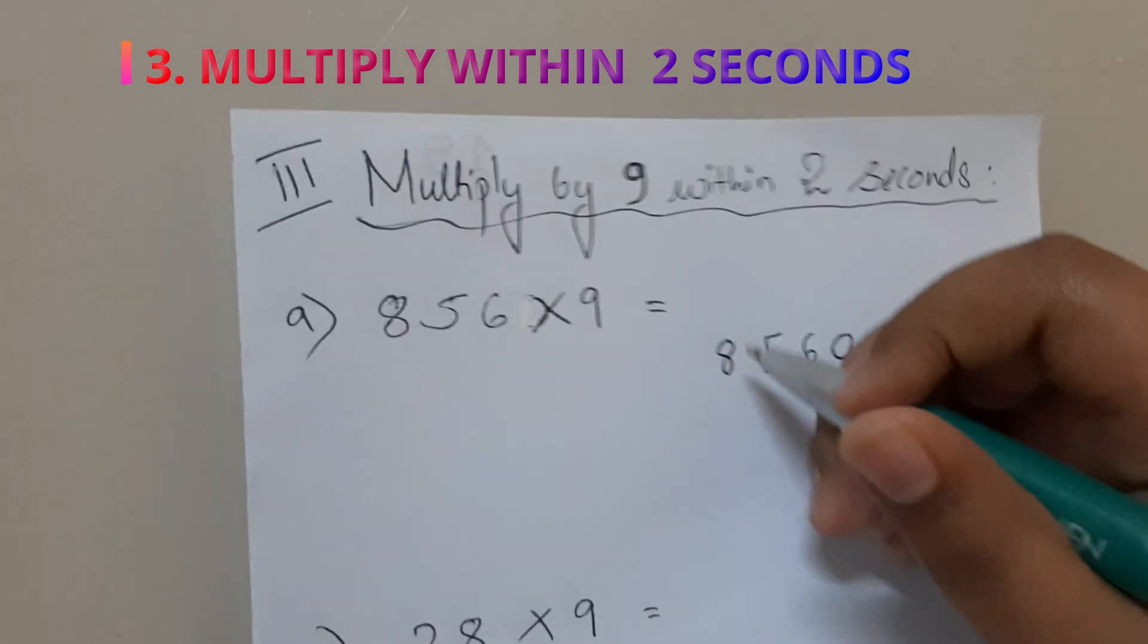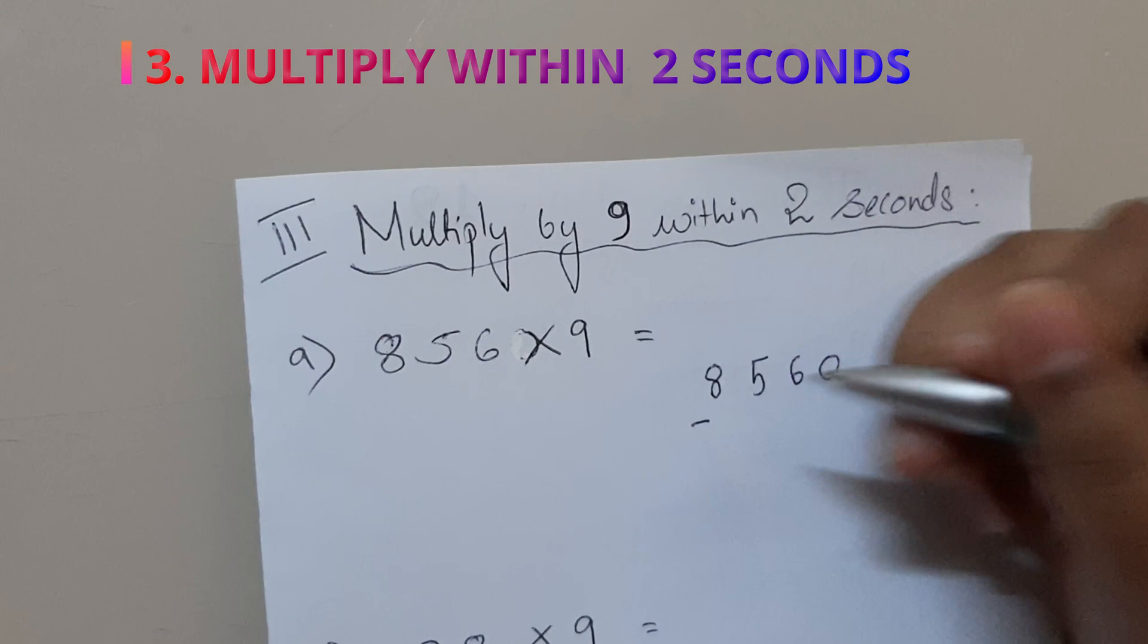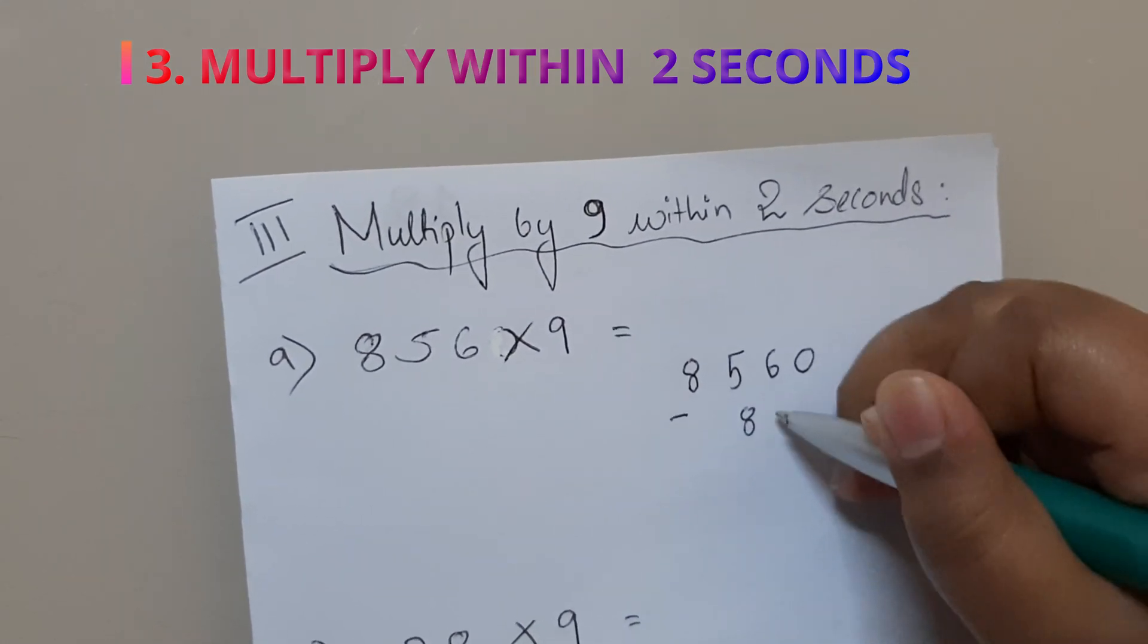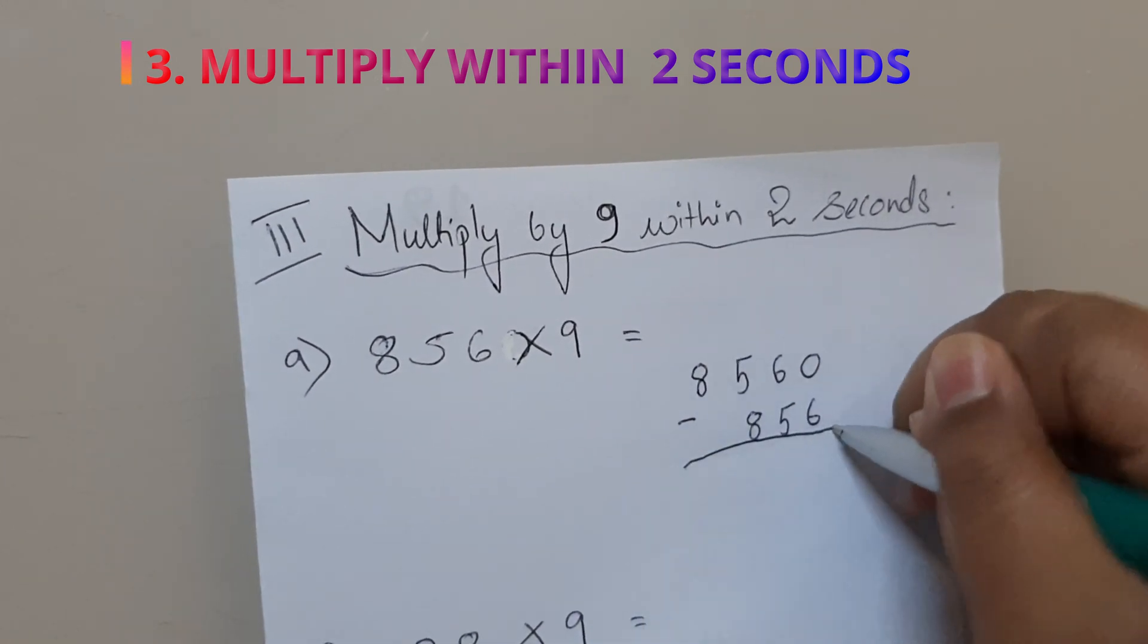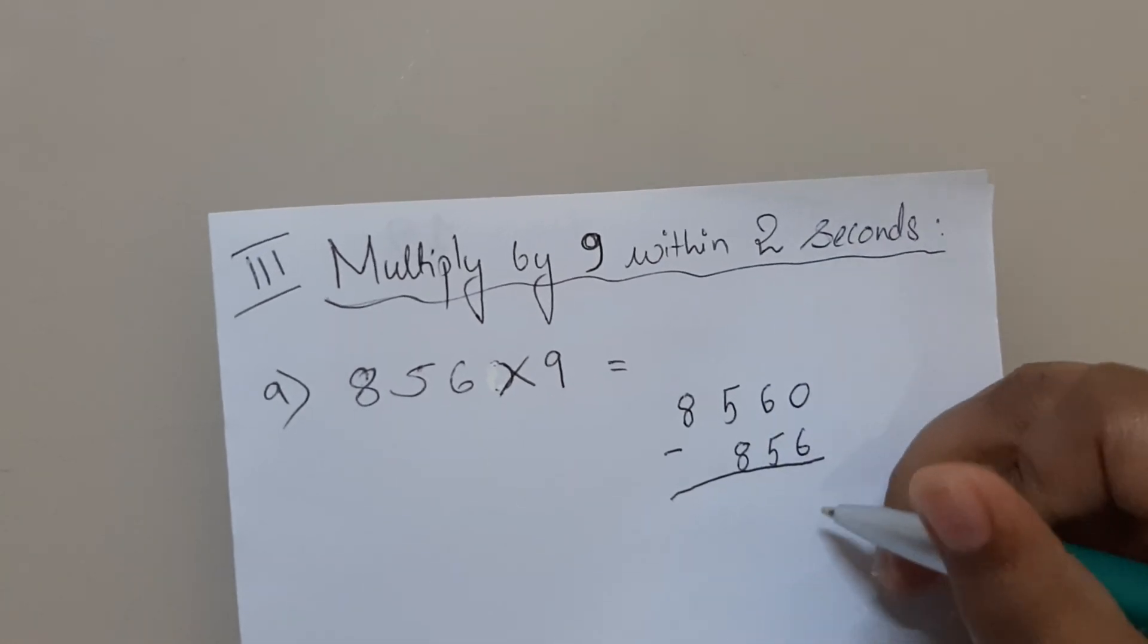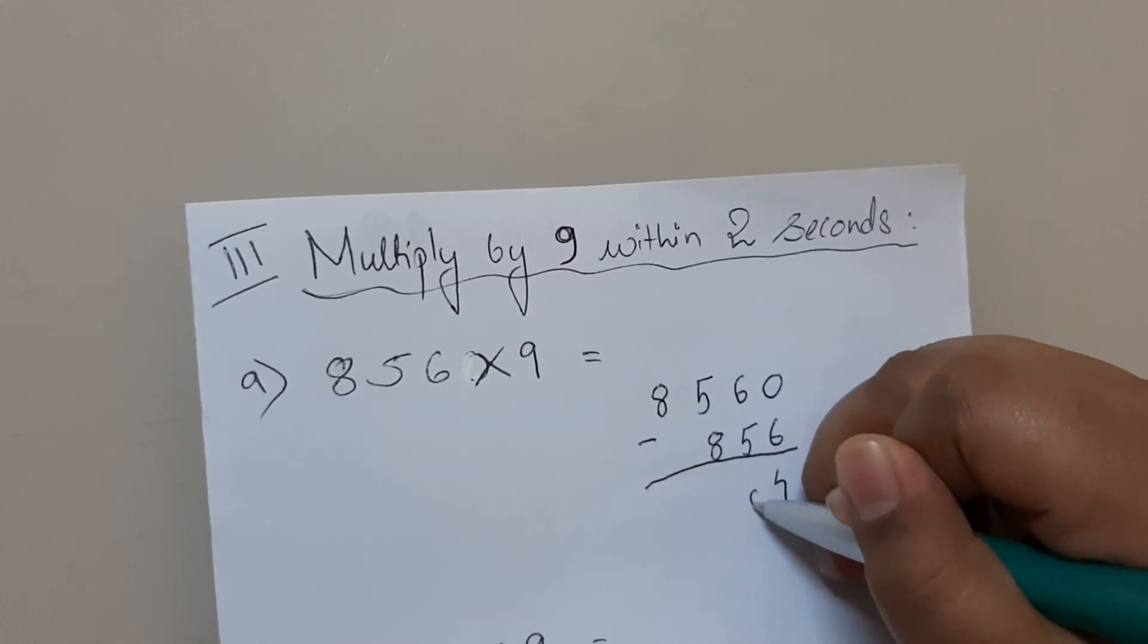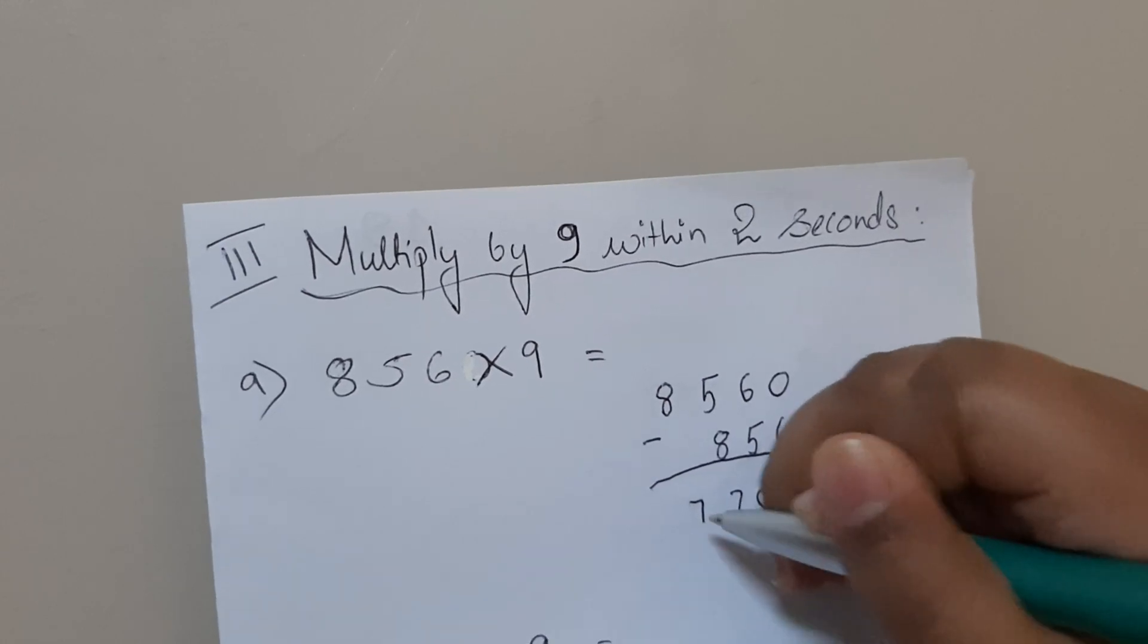And now we subtract the original number, that is 856. This one is 4, this one is 0, this one is 7, and this one is 7.